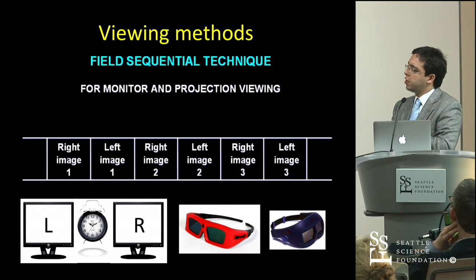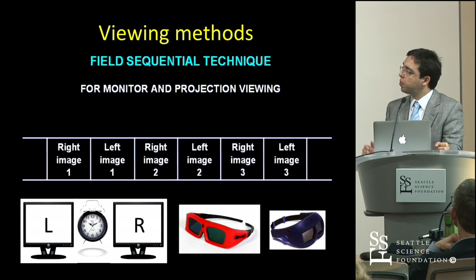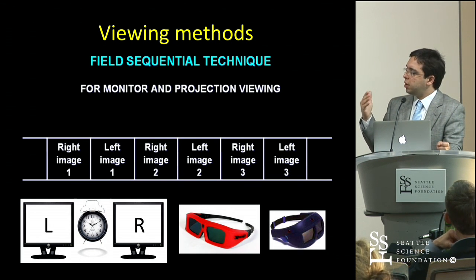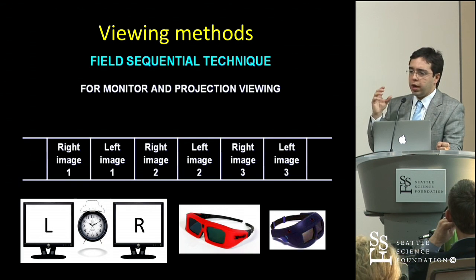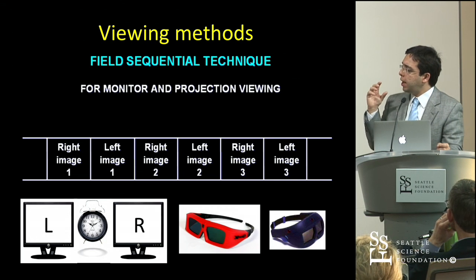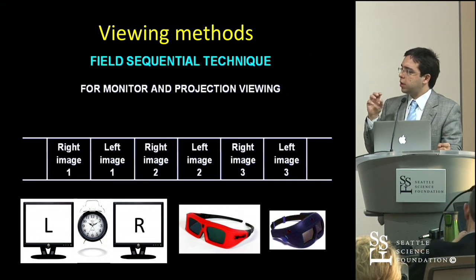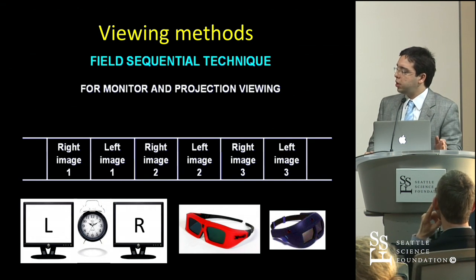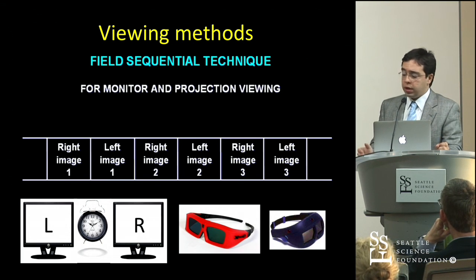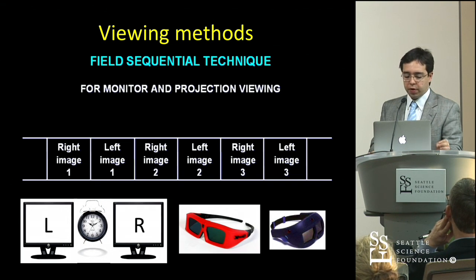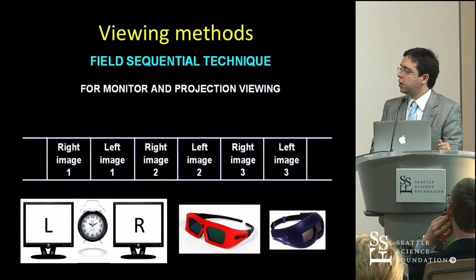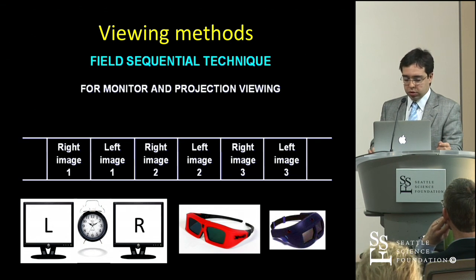Another way used by 3D TVs is the field sequential technique, where images are displayed sequentially — right, then left, then right, then left. Viewers wear active glasses, called active because they use batteries. The glasses blink, opening and closing in sync with each image being shown at a high rate so you don't notice the blinking. This is very good quality, but the active glasses are not cheap, making it more expensive for large audiences such as in a movie theater.